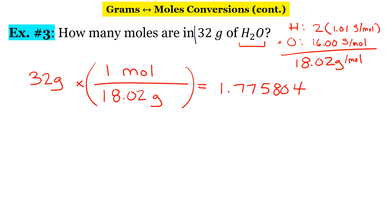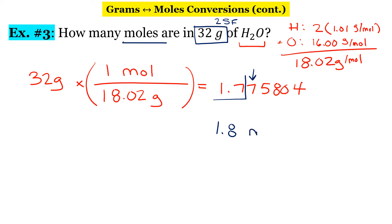The original given was 32 grams — that's two significant figures — so we round our final answer to two significant figures. Going from left to right, underline the first two significant digits. The third digit is 7, which is between 5 and 9, so we round up. The final answer is 1.8 moles.